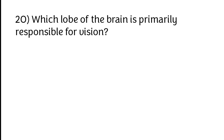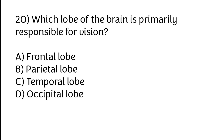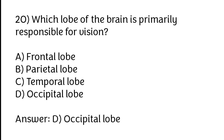Which lobe of the brain is primarily responsible for vision? Options: A) Frontal lobe, B) Parietal lobe, C) Temporal lobe, D) Occipital lobe. The correct answer is option D, occipital lobe.